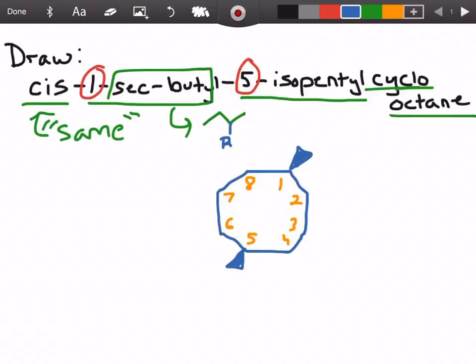But in sec-butyl it's going to attach at carbon number 2 and we're going to have a sectioned off butyl group. So in this case we're going to have this be carbon number 2 right here and we'll just section it off and that gives us sec-butyl. You can see we have 1, 2, 3, 4 carbons so we know it's a butyl group.